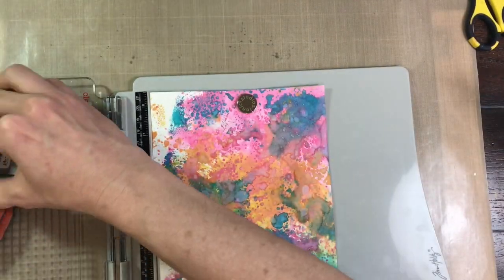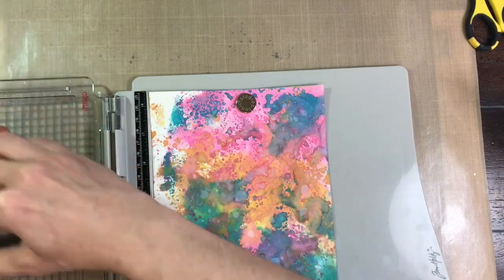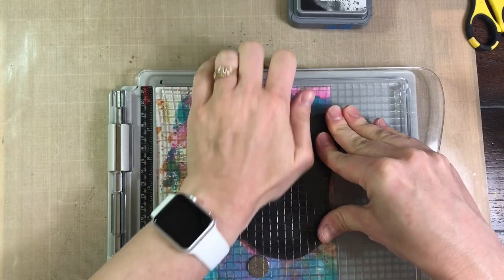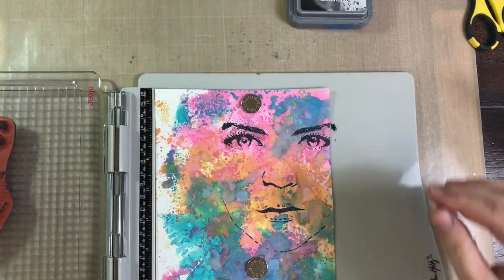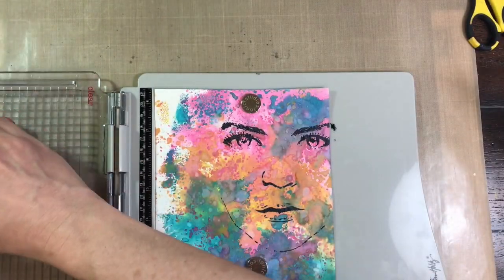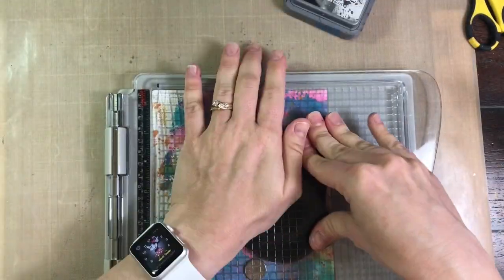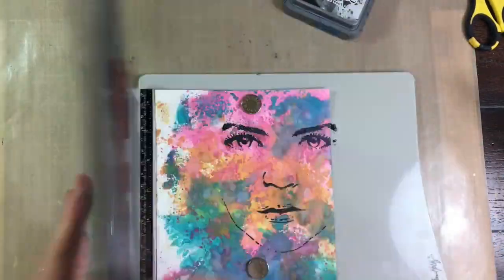So I've grabbed my stamp platform and I'm inking up my stamp with some distress oxide black soot. And the stamp that I have there is actually a Unity stamp and that one's called Windows to the Soul and it's a large one.